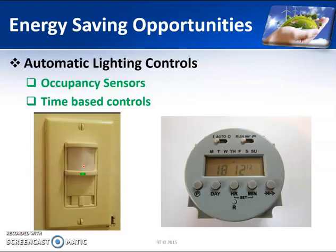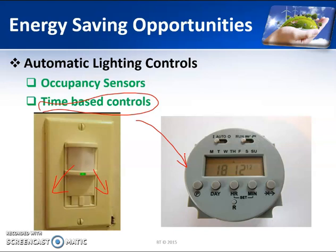The next opportunity is using automatic lighting controls. One type is occupancy sensors, which you may have seen in corridors or walkways in hotels. Whenever the area has no human presence the lights are turned off, and whenever a person enters that room the lights are automatically turned on. Another type is time-based controls, where a timer can be set for each day from Monday to Sunday, with different schedules for working and non-working days, controlling when lamps turn on and off.